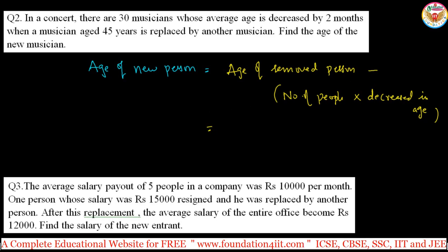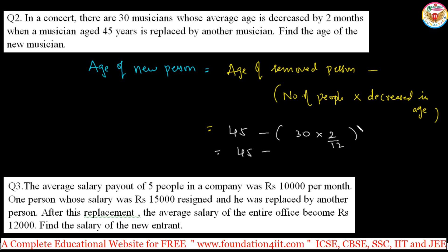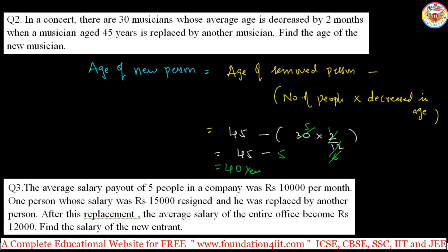Applying the formula: age of the removed person is 45 years, number of people is 30, and the decrease is 2 months. Convert 2 months to years: 2/12 = 1/6. So: 45 − 30 × (1/6) = 45 − 5 = 40 years. The age of the new musician is 40 years.